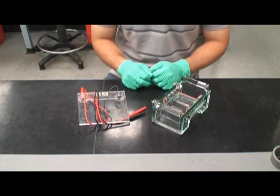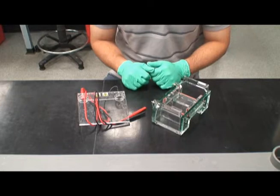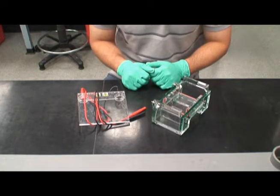An agarose gel and an electrical current can be used to separate DNA by size. This is called gel electrophoresis and will be used in this lab. This video reviews how to create a proper gel.